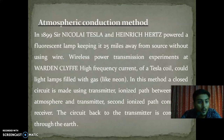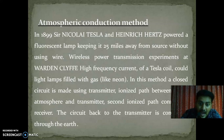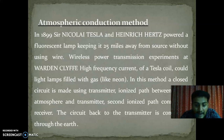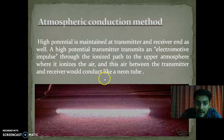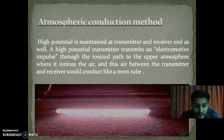Wireless power transmission experiments at Wardenclyffe — a high frequency current of a Tesla coil could light lamps filled with gas like neon. In this method, a closed circuit is made using a transmitter, an ionized path between the upper atmosphere and transmitter, and a second ionized path connecting the receiver. The circuit back to the transmitter is connected through the earth. The ionized path between the upper atmosphere and transmitter provides a second ionized path connecting the receiver, which will transmit the power. High potential is made at both the transmitter and receiver end.